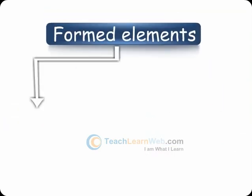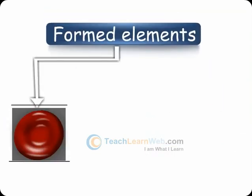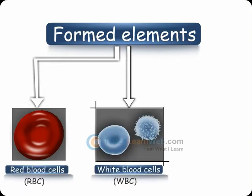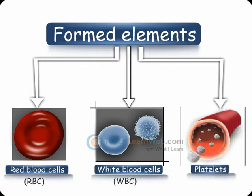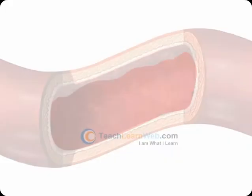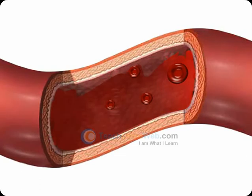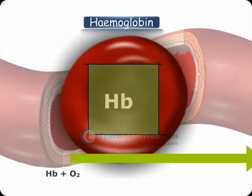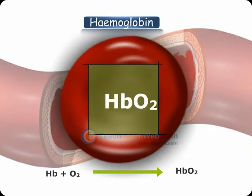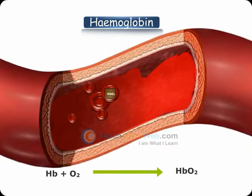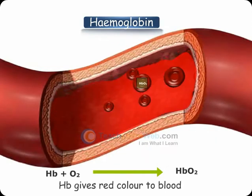Formed elements are otherwise called cells. There are three types of cells in the blood: red blood cells (RBCs), white blood cells (WBCs), and platelets. Red blood cells contain an iron pigment called hemoglobin. Hemoglobin binds with oxygen and transports it to all parts of the body. The presence of hemoglobin gives red color to the blood.